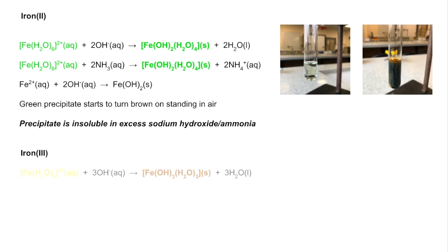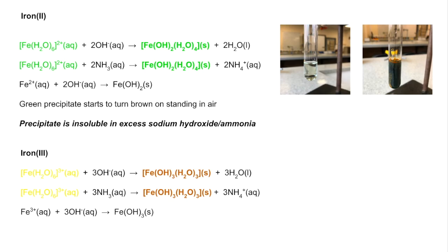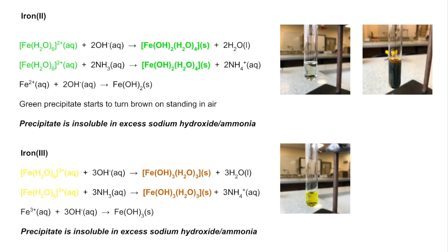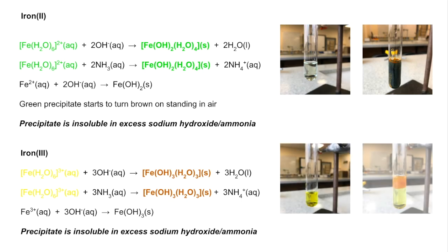For iron 3+, the precipitation reaction gives an orange-brown precipitate. The precipitate is again insoluble in both excess sodium hydroxide and ammonia. Starting with a yellow solution, you end up with that orange-brown solid — the iron 3 hydroxide precipitate.